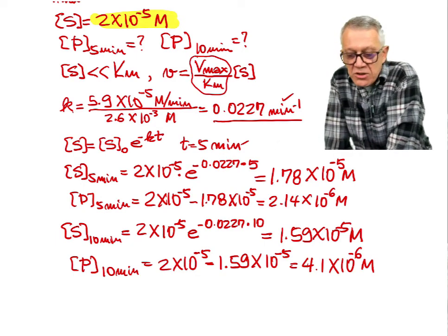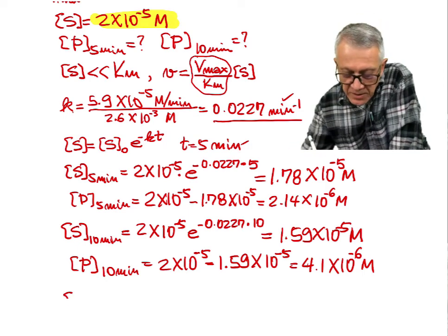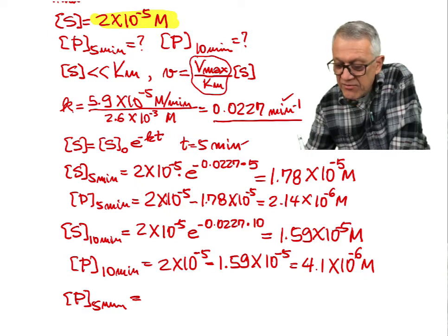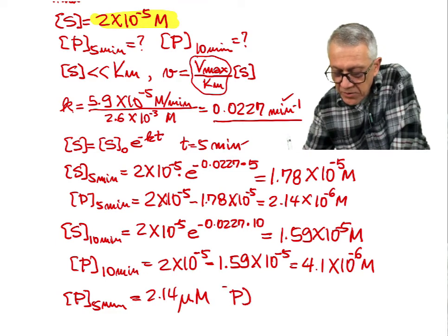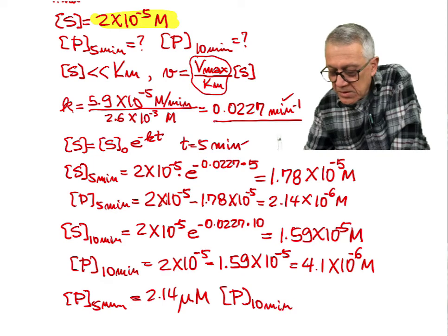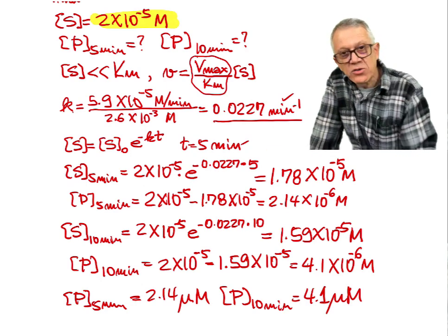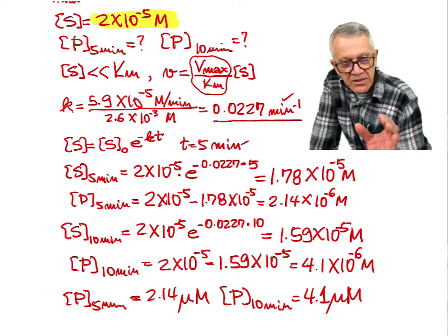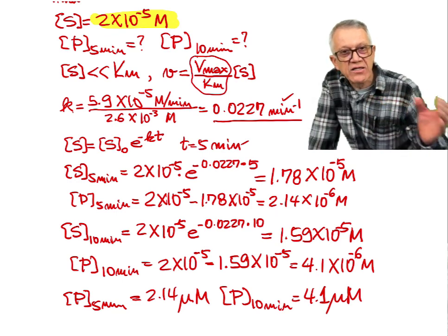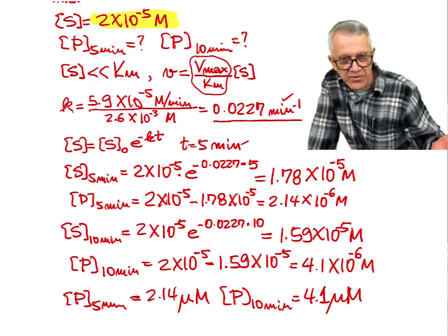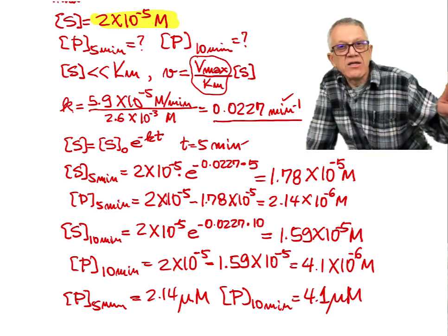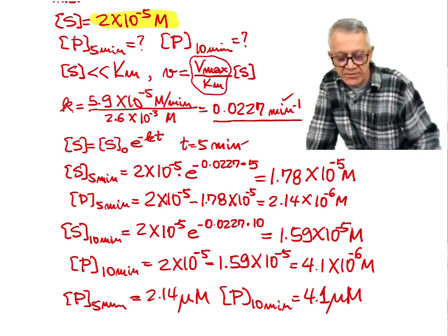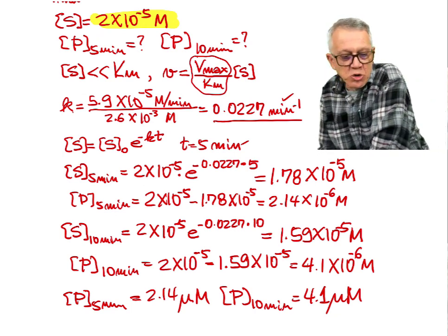At 5 minutes, the product concentration is approximately 2.14 micromolar. At 10 minutes, the product concentration is 4.1 micromolar. We start with substrate alone and no product; as S decreases exponentially, P increases proportionally. That's the solution for problem 7.